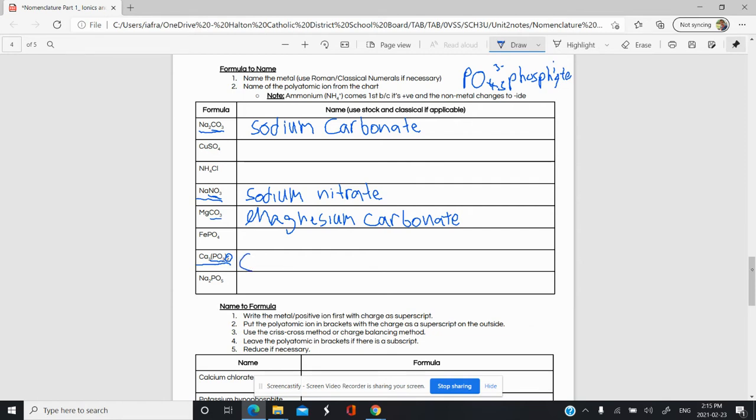This is calcium phosphite, not phosphide. If it was calcium phosphide with -ide, that would be Ca3P2. If it was phosphide, that would be the regular binary ionic. It's not this.